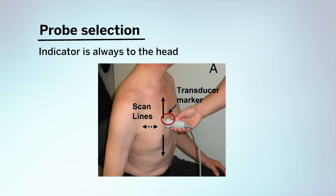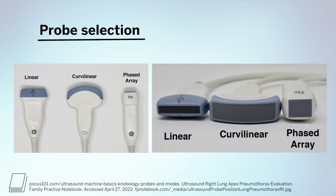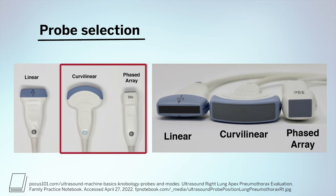When we start ultrasounding the lung, the probe indicator is always going to be towards the patient's head. The probe you choose depends on what you're looking for: for something fine or diminutive like a pneumothorax, you would use the linear probe, while for other pathology we're often using the curvilinear or phased array probe on cart-based machines with several probes.